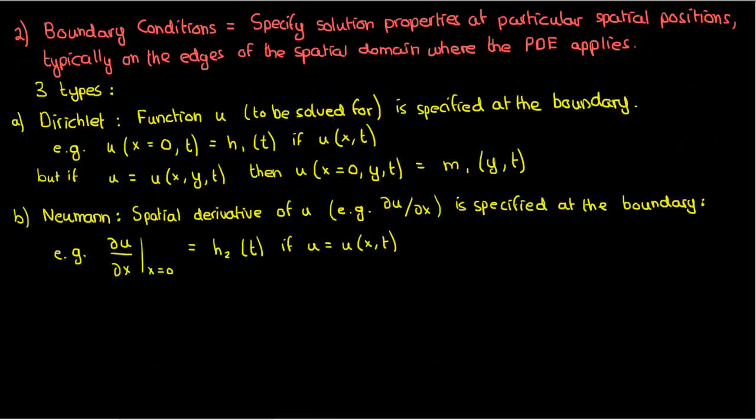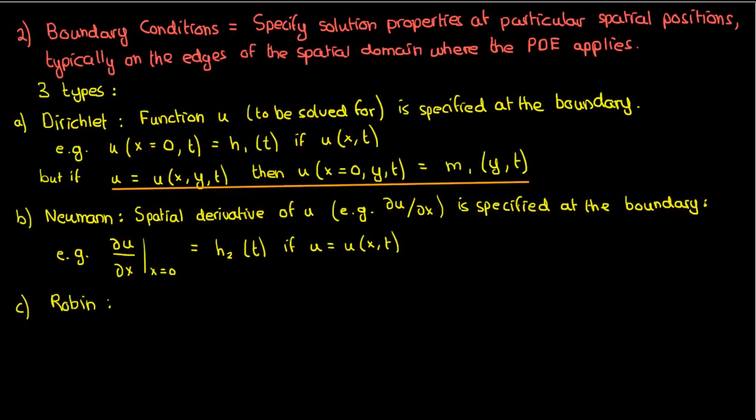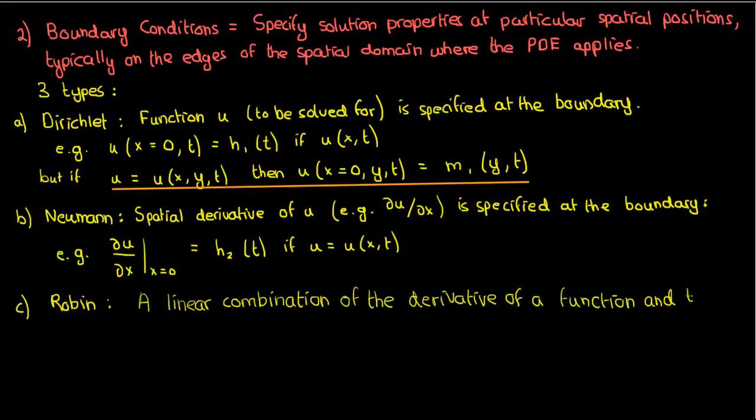The second type of boundary condition is a Neumann boundary condition, in which the derivative of the solution is specified at the boundary instead of the function itself. Again, if u was a function of two spatial variables and one time variable, then the Neumann boundary condition at, say, x equals zero would specify what the derivative of u and x would look like as a function of y and t, similar to what we had up here for the Dirichlet boundary condition, except now it's the derivative.